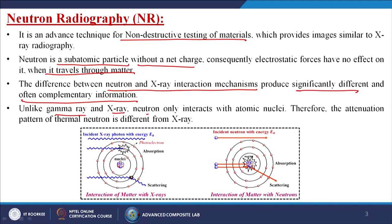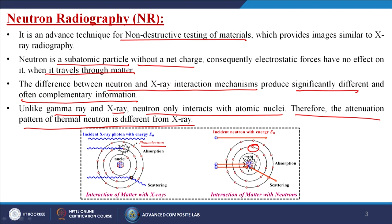Unlike gamma rays and X-rays, neutrons only interact with atomic nuclei; therefore the attenuation pattern of thermal neutrons is different from X-rays. When talking about the interaction of matter with X-rays, the X-ray photon with energy comes in and hits the atoms, and then photoelectron radiation comes from the material itself. But when talking about the interaction of matter with neutrons, the neutrons do not hit the atoms — they directly hit the nuclei of that particular material.